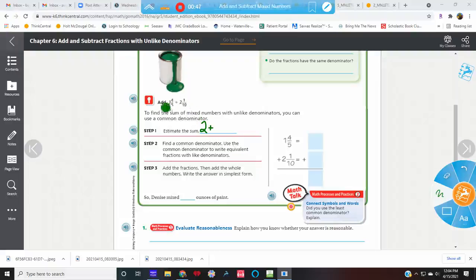Now this one, 2 and 1 tenth, if I have 1 out of 10, I don't have a lot, so I'm going to say that that's 2. So I'm going to say that my estimate is 4. Now this is what I want you to see.